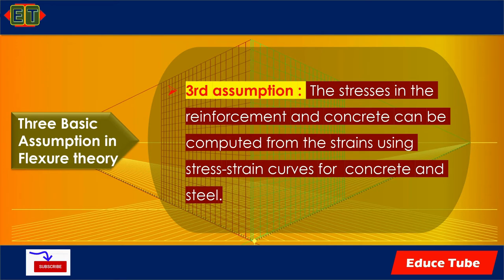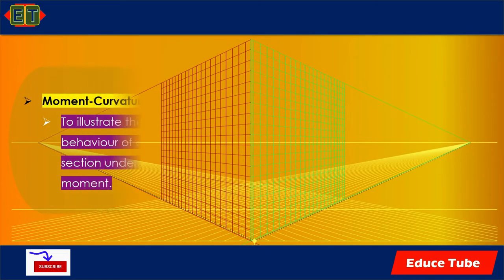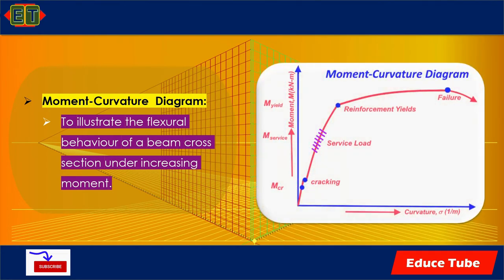The moment-curvature relationship describes the flexural behavior of a variety of beam sections. In the first stage of the diagram, for moments less than the cracking moment M_cr, the entire beam cross section is available to resist bending. In this range the strains are small and the diagram is nearly vertical and very close to a straight line.